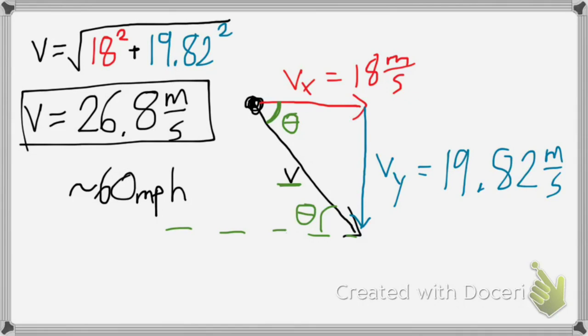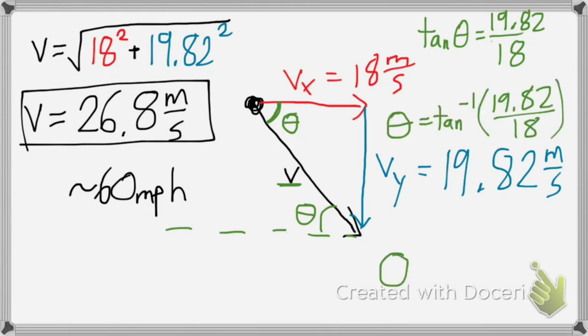I also need to solve for theta, the angle at which it lands. And for that, I'm just going to use tangent. And that's simply the opposite side over the adjacent side. To solve for theta itself, I'll take an arc tangent. And it comes out to be around 47.7 degrees.